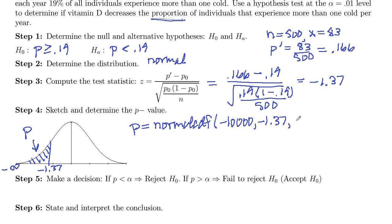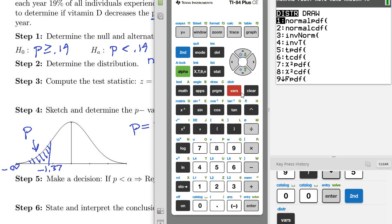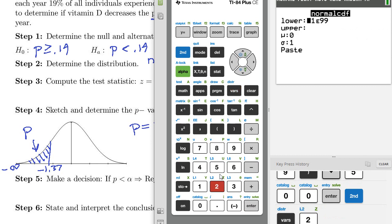And we are dealing with z scores here. So 0, 1 for mean and standard deviation. So second variables, normal CDF number two.